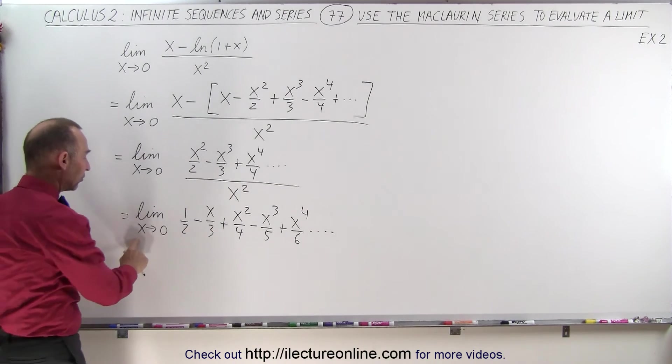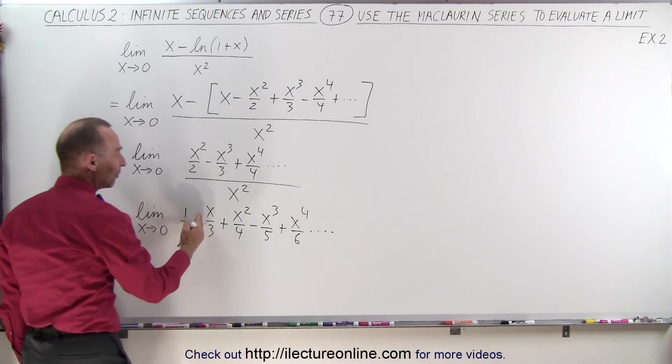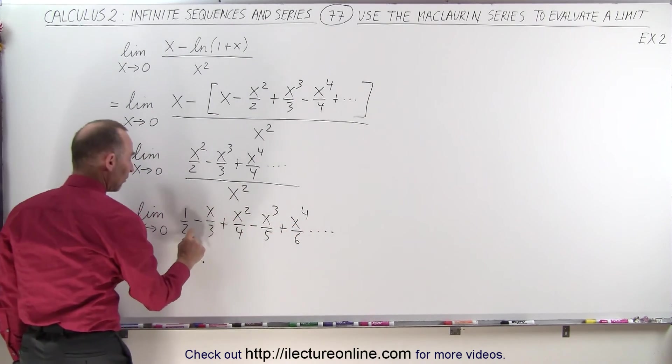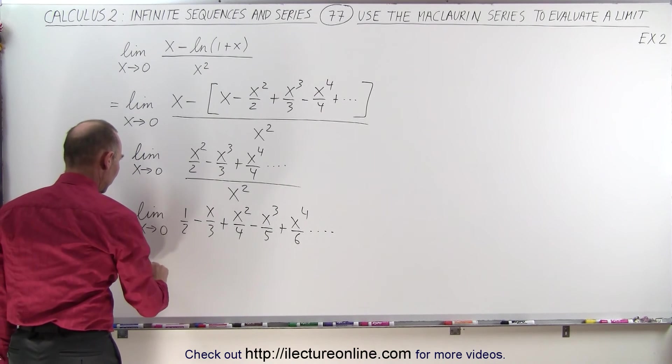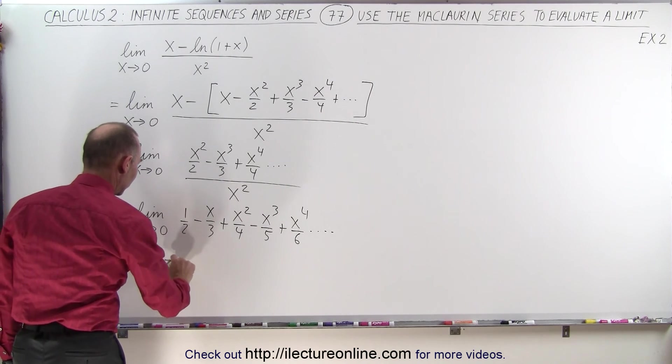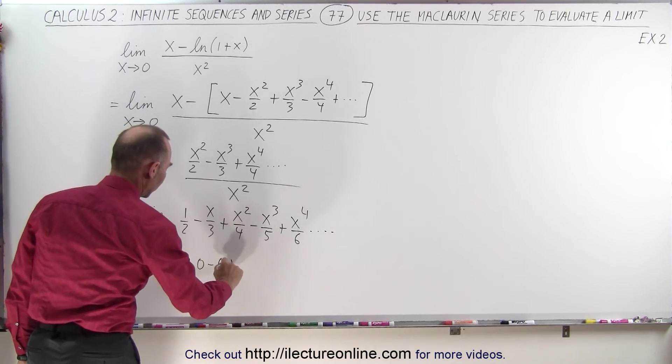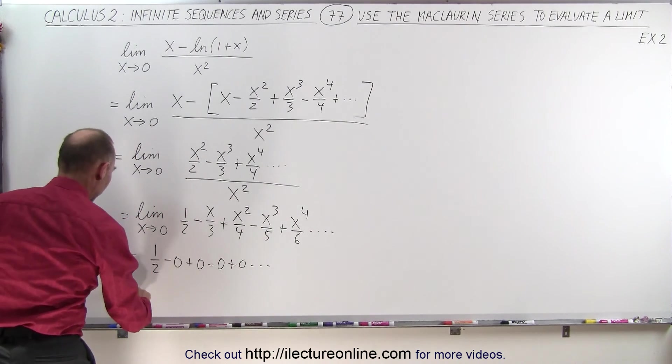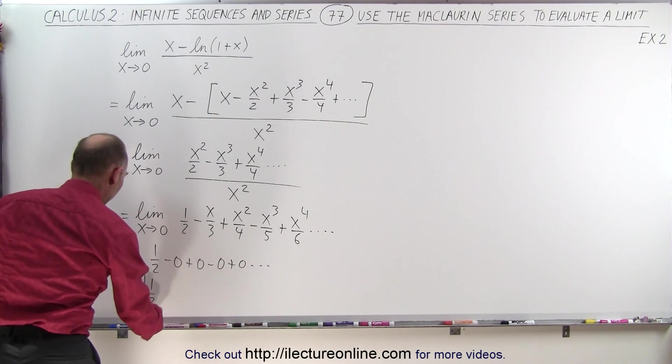And now we can allow x to go to 0, which means that every term goes to 0 except the very first one, so this becomes equal to 1 half minus 0 plus 0 minus 0 plus 0 and so forth, or this is equal to 1 half.